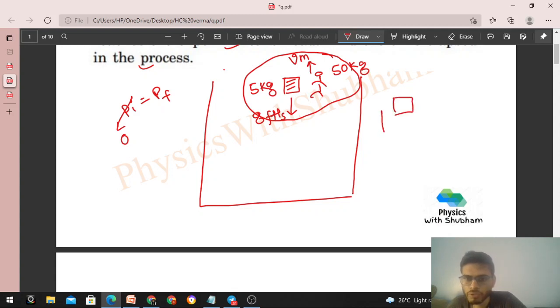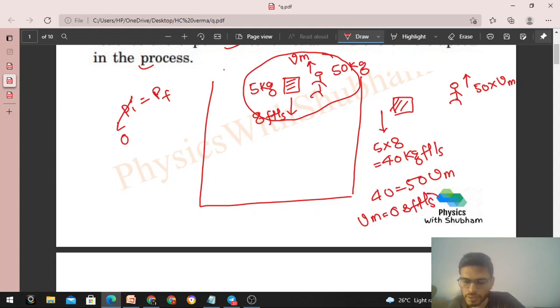Now finally the pillow has a downward momentum. How much? Pillow's mass is 5 into its speed that is 8, so 5 into 8 equals 40 kg feet per second downward momentum. So the same momentum should be for the man in the upward direction. So mass of the experimenter will be 50 into its velocity Vm. Because net momentum is zero, the pillow's downward momentum equals the experimenter's upward momentum. So equate 40 to 50 into Vm. So Vm comes out to be 0.8 feet per second.